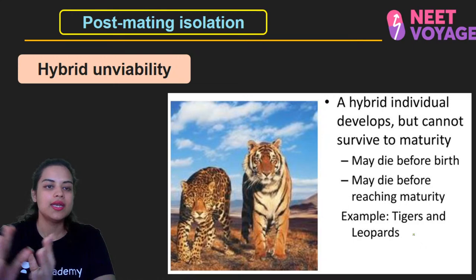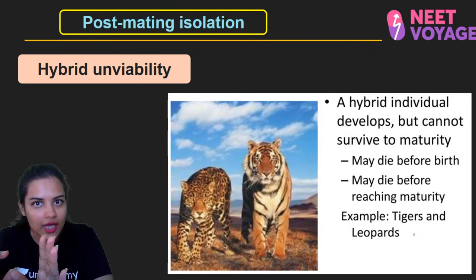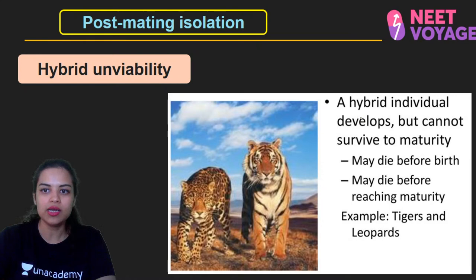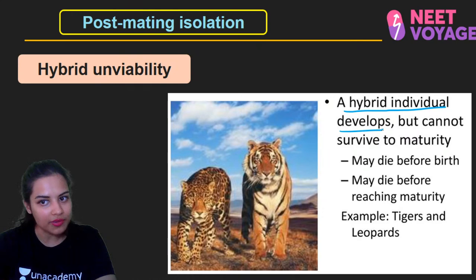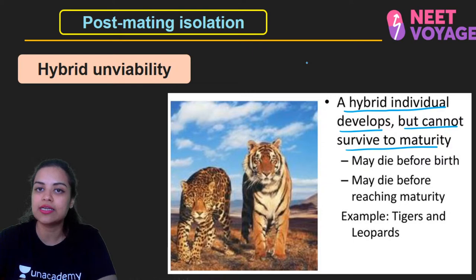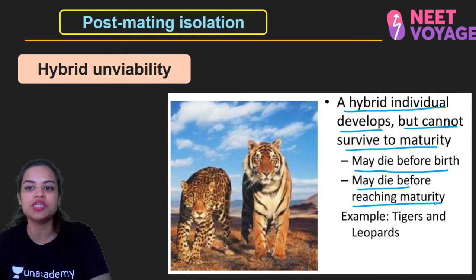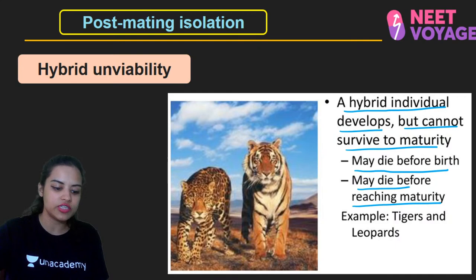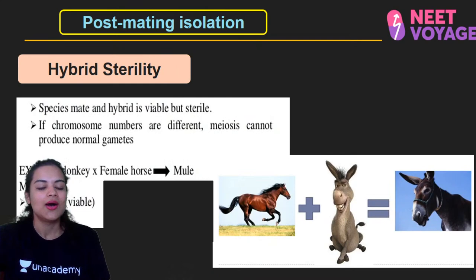Hybrid inviability occurs when the zygote grows and a hybrid forms but the hybrid individual dies either before birth or cannot survive to maturity — it dies in the infant period. This is called hybrid inviability. The hybrid may die before birth or before reaching maturity.